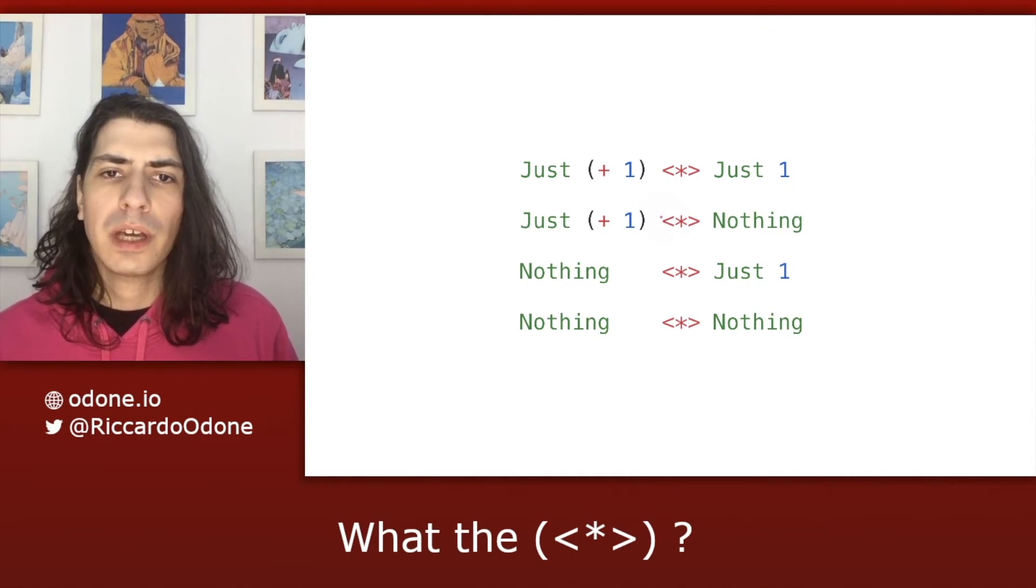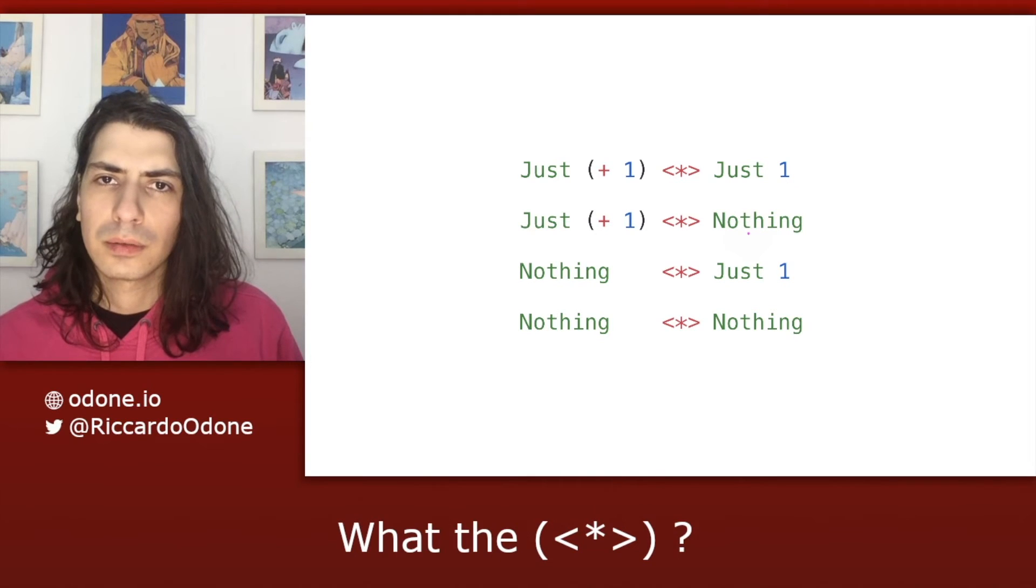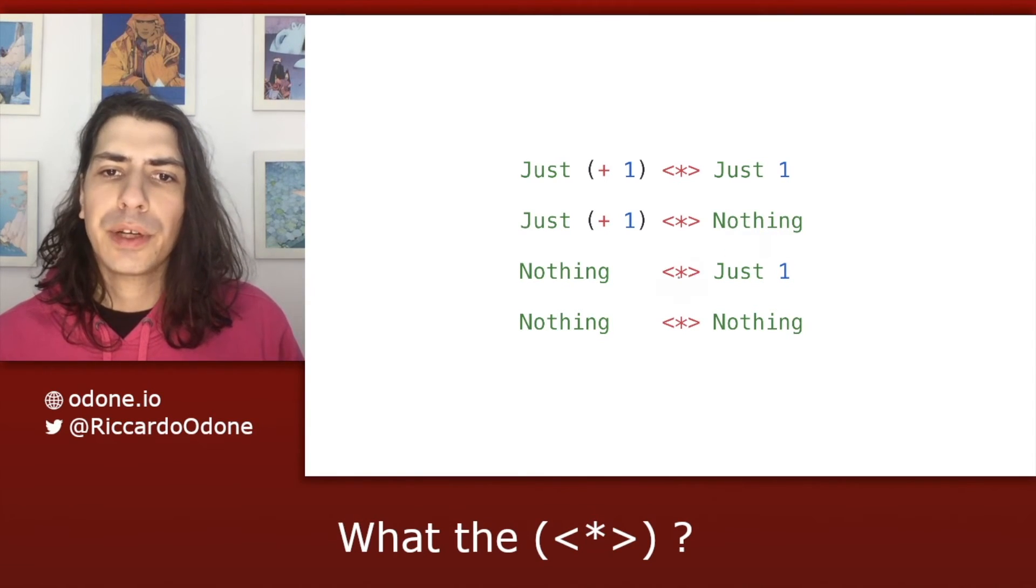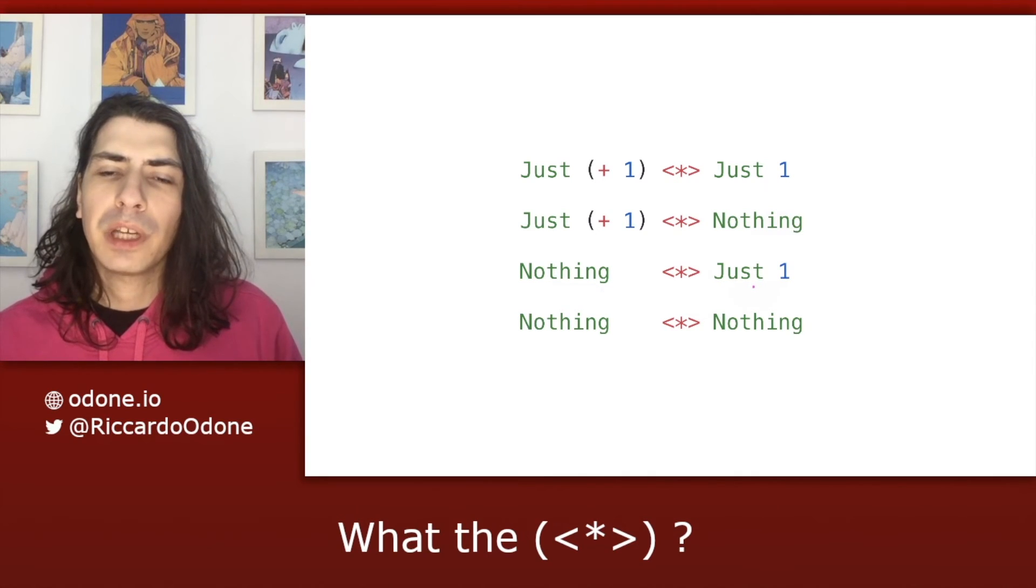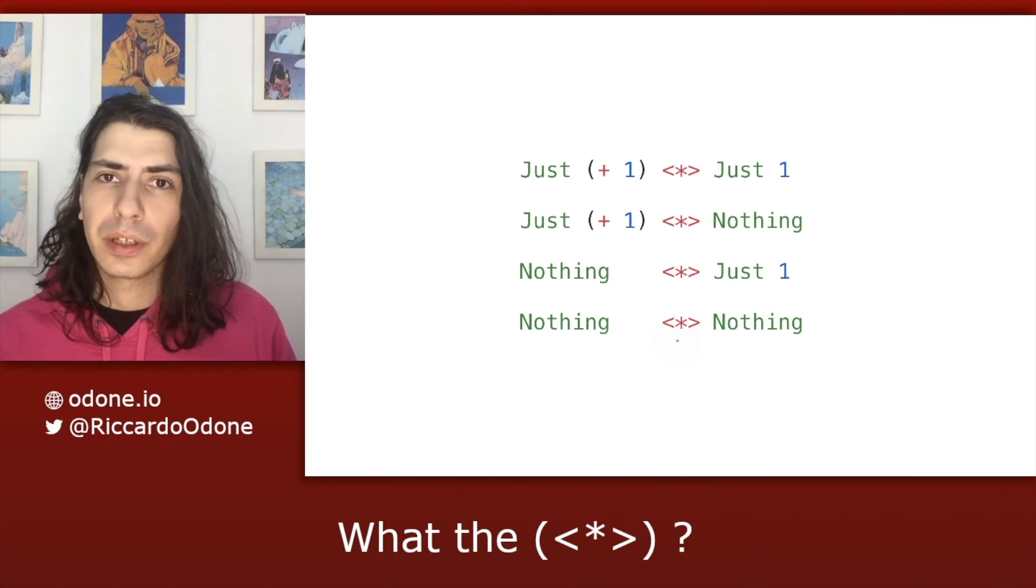In the second case, we have a value plus one wrapped in a just. And as a value, we have a nothing. In this case, the semantics of maybe make it so that we get out a nothing. In the third case, we don't have a function actually, because it's a nothing, but we have a value on the right, just one. And here again, we get nothing out. In the fourth case, probably not surprising, we get nothing out again.